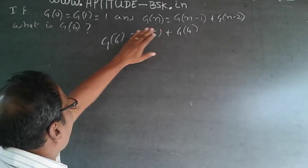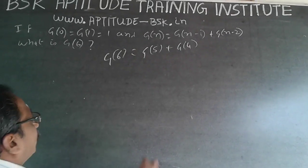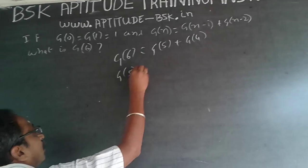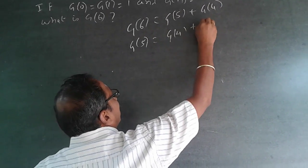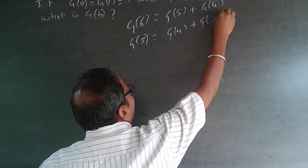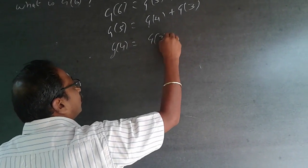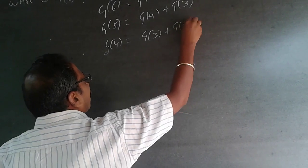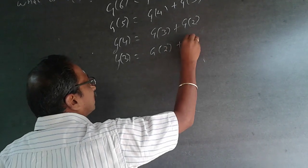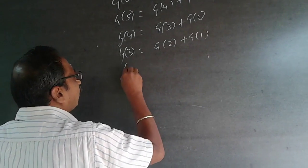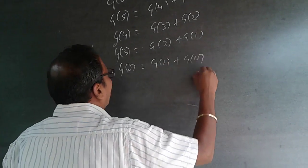I don't know what g of 5 or g of 4 are. I only know g of 0 and g of 1, so I have to bring it down to those. So g of 5 will be equal to g of 4 plus g of 3, using the same pattern. And g of 4 will be equal to g of 3 plus g of 2.